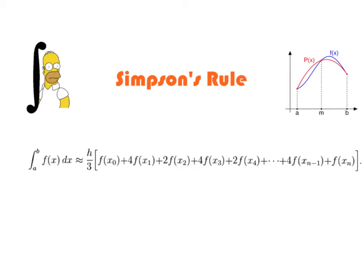And how it differs from the other rules is the Riemann sums use rectangles, trapezoid of course uses trapezoids. Simpson's rule tries to fit a parabola inside the curve.